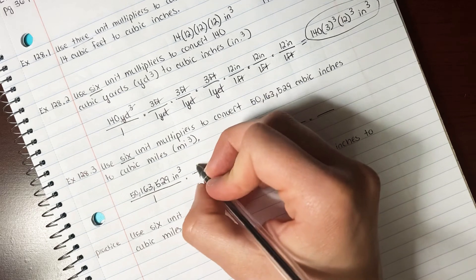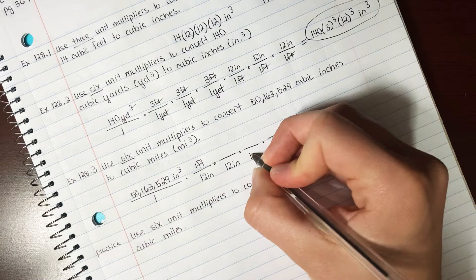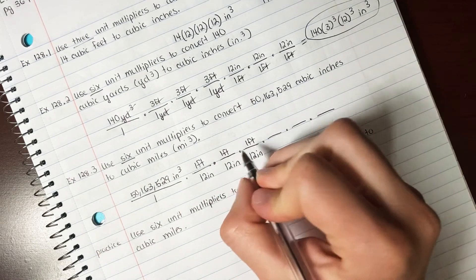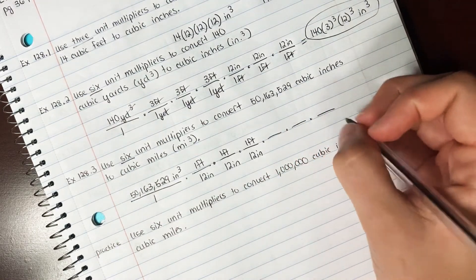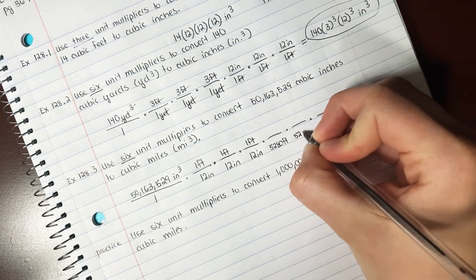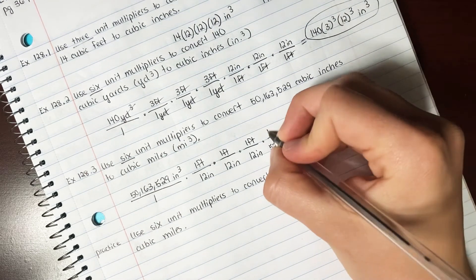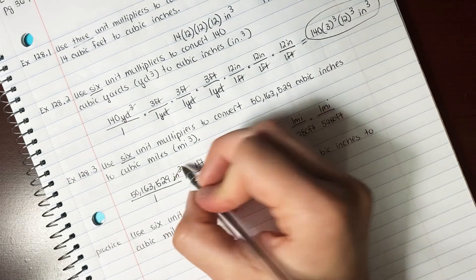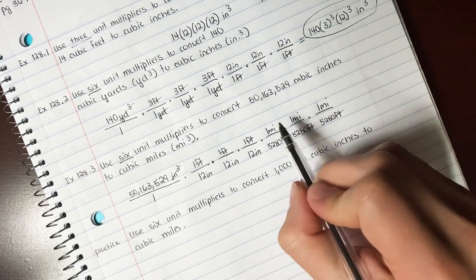Because there are 12 inches in a foot. Then we need to go from feet to miles. Hopefully you remember how many feet are in a mile. 5,280 feet. If you don't have that memorized, get it memorized. And a mile. So we cancel out our inches, cancel out our feet, and we're left with miles cubed.